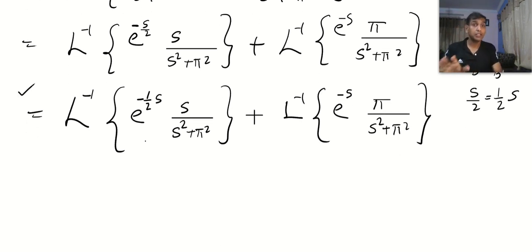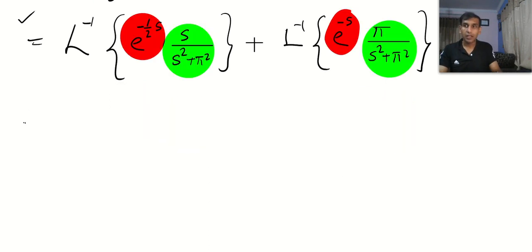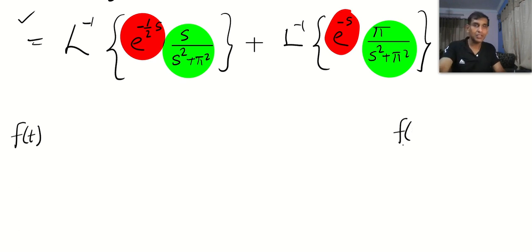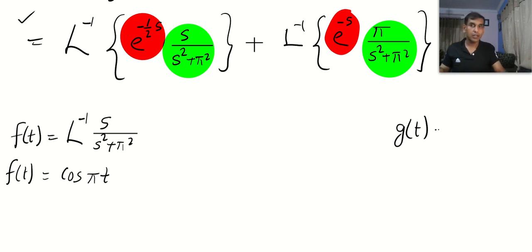Now apply the second shifting theorem inverted version. Since we have two functions, I will use f and g. f of t equals the Laplace inverse of the green part s/(s² + π²), which is cos(πt). And g of t equals the Laplace inverse of π/(s² + π²), which is sine(πt).